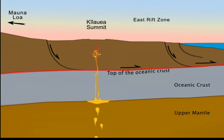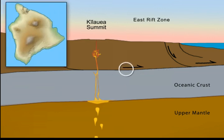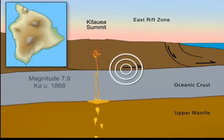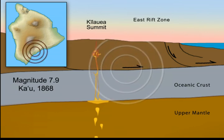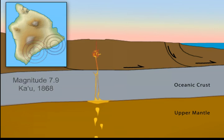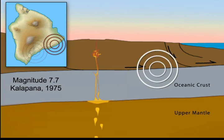It is along the boundary between the ancient ocean floor and the overlying volcano that the largest earthquakes in Hawaii's history have occurred. That interface lies 7 to 10 kilometers deep, or roughly 26,000 feet. Slip there produced the magnitude 7.9 Kauu earthquake in 1868 and the magnitude 7.7 Kalapana earthquake in 1975.